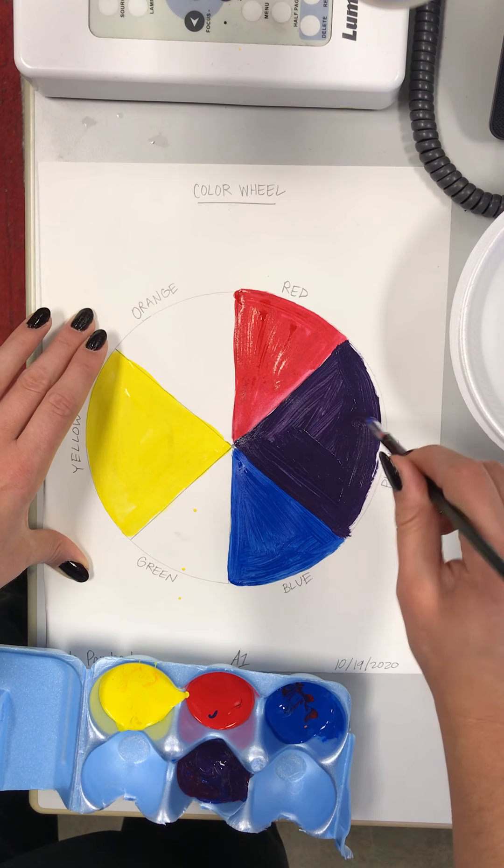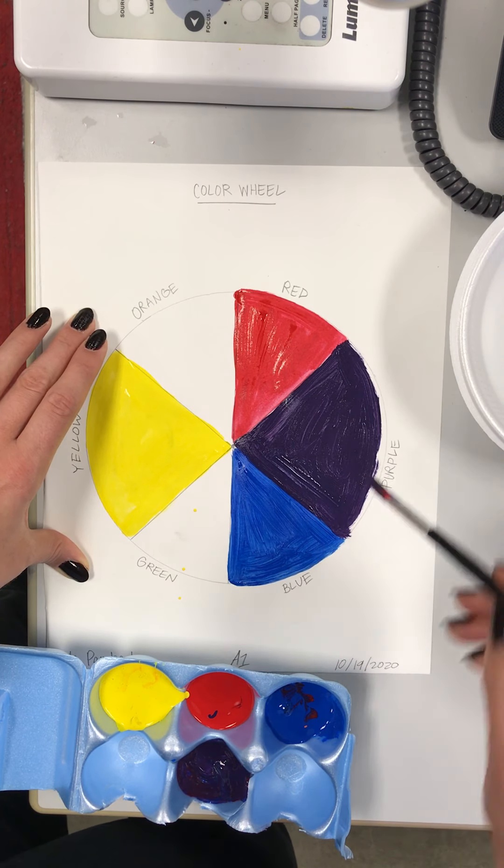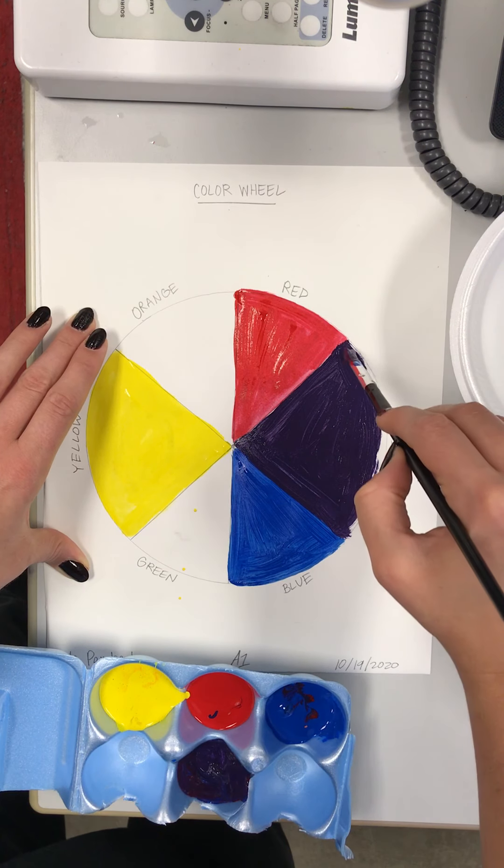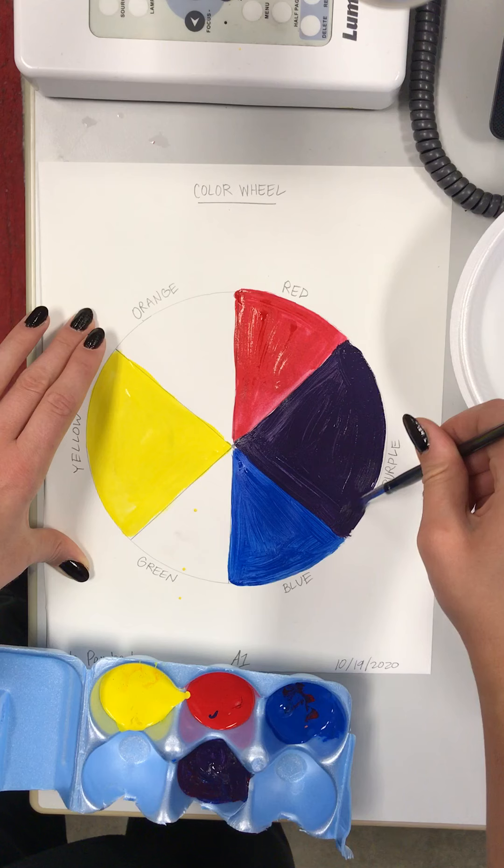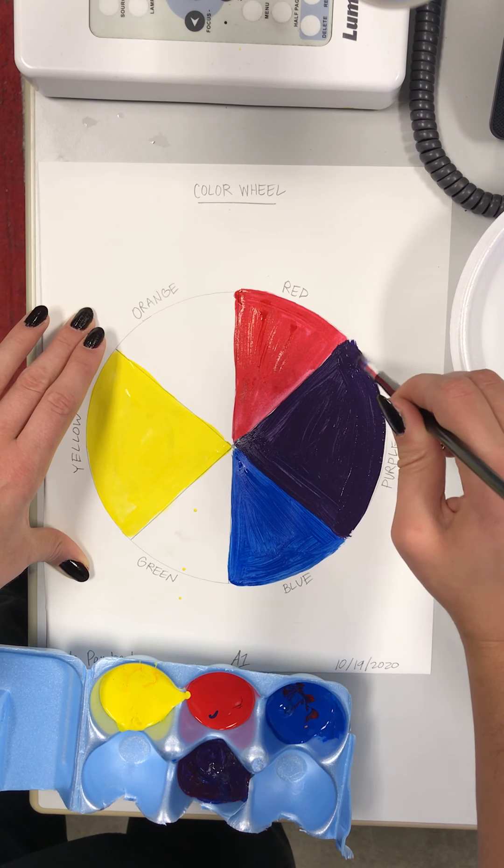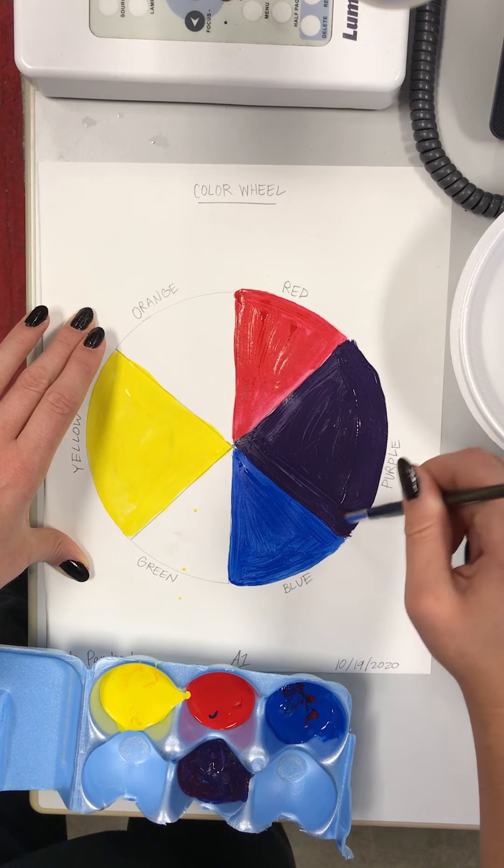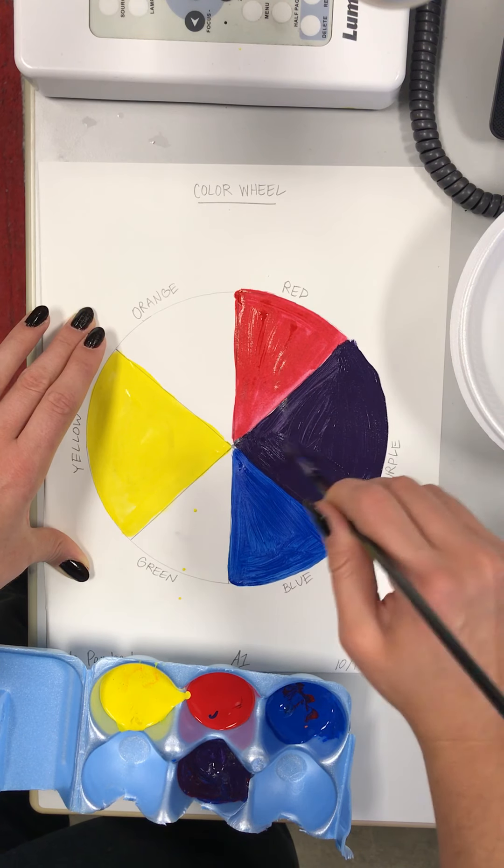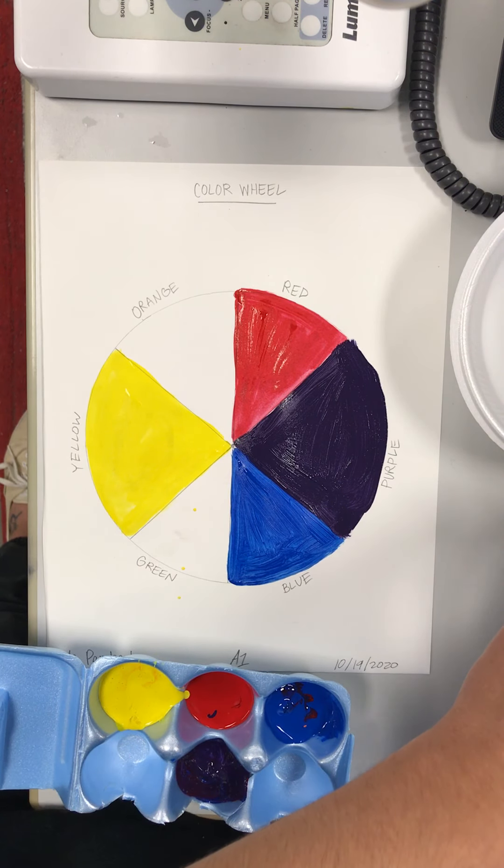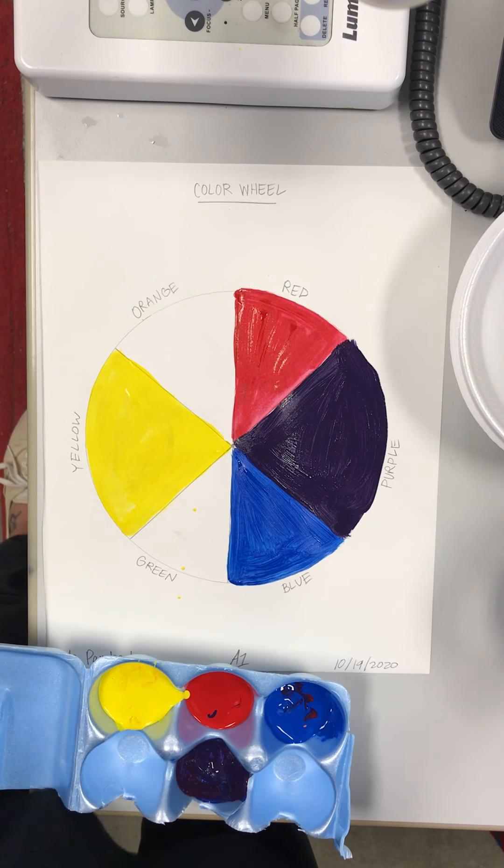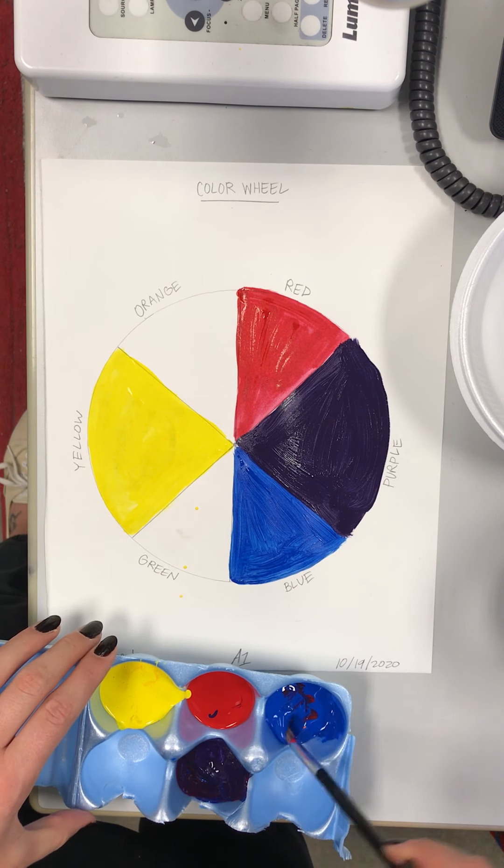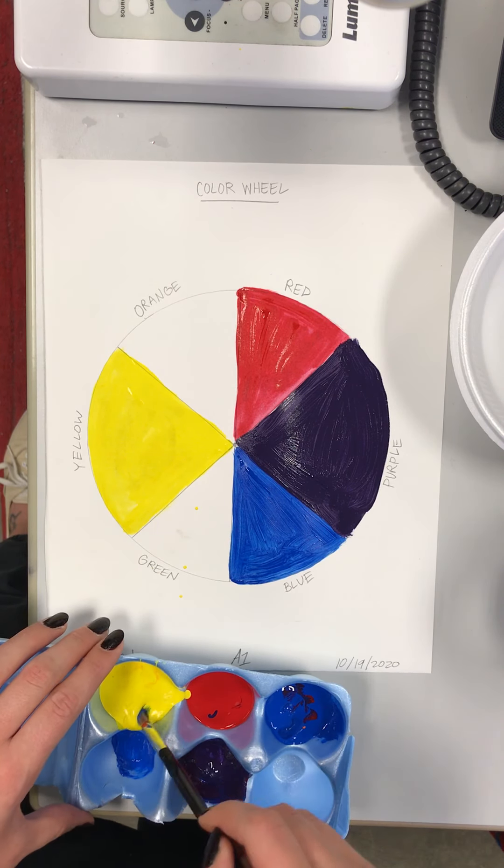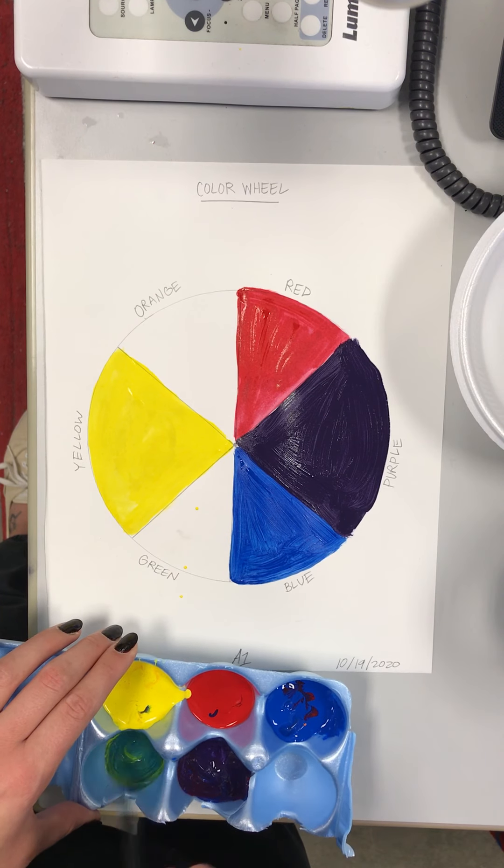When you're mixing, red is a very strong color and you're not going to need as much of it as you will the blue and the yellow when you're mixing things up today. So just be aware. We got our purple, lovely. Next I'm gonna make green, so blue and yellow are right next to it, so I know that I'm gonna use blue and yellow to make my green.